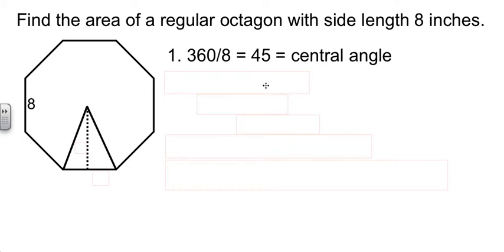Now, when I draw in the apothem, it's going to bisect that angle. So this 45 degree angle here gets cut in half to make 22.5. It also bisects this side. Well, if the side was eight, then it leaves a four there, and we're looking for the apothem.